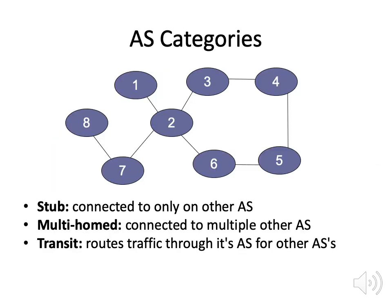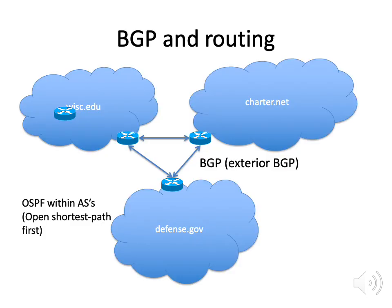There are several different categories of autonomous systems. One is a stub — an AS that is connected only to one other AS. For example, wisconsin.edu might be an autonomous system connected to only one other network. A multi-homed AS might be connected to multiple other autonomous systems, such as AS 4 and AS 5 in this case. Transit ASes are ones that packets pass through to get from one place to another. For example, AS 7 and AS 2 are transit because traffic from AS 8 has to go through AS 7 and AS 2 to get to AS 3.